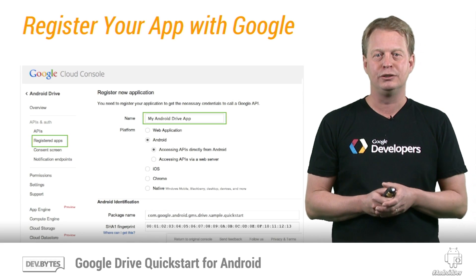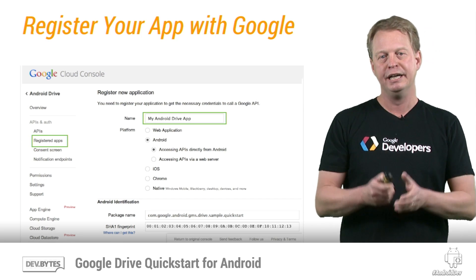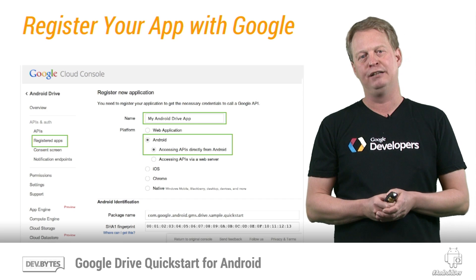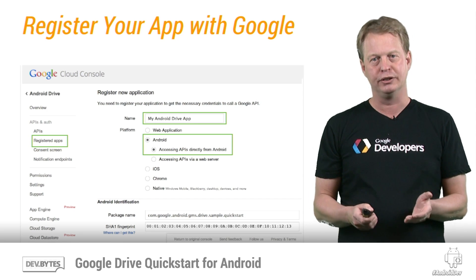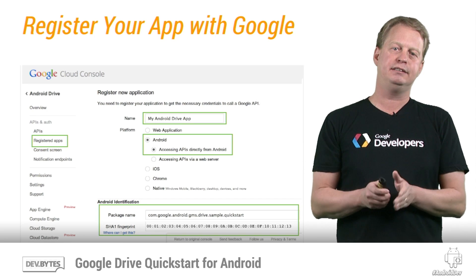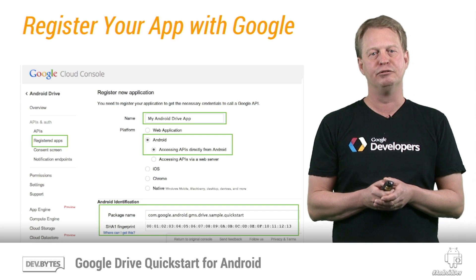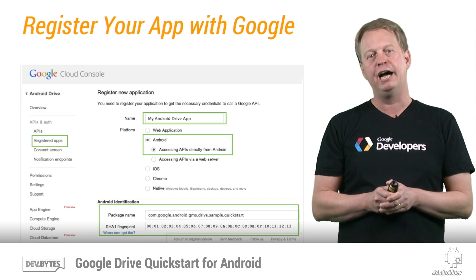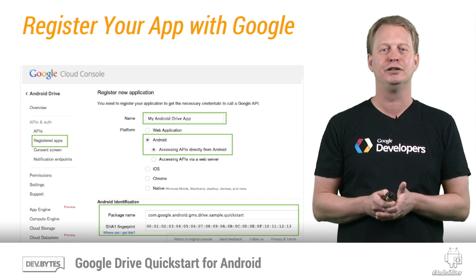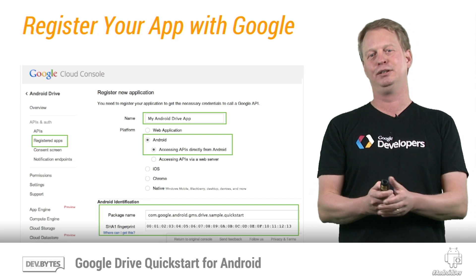Now we're ready to register our app, which will have the Drive API enabled. Select Registered Apps on the right and give the app a name. Then select Android as the platform since we're building an Android app and accessing our APIs directly from Android. The last thing you need to do is enter the Java package name of your app and the SHA-1 value that we previously generated using KeyTool. With this, we have successfully registered our app with the Google Cloud Console, and we are now ready to execute the app.